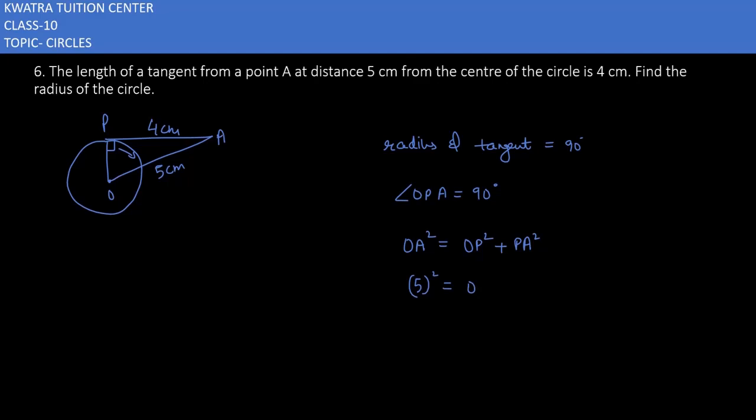OP square is unknown. And PA is 5... sorry, PA in this case is 4. So 5 square is 25, minus 16 is equal to OP square. 25 minus 16 will give you 9 as OP square. And this will be 3, because 3 square is equal to OP square. Square root on both sides cancels the square, and yes, OP will be 3 cm.